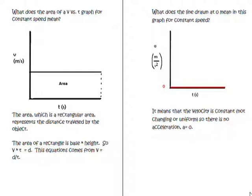The last thing we'll talk about is when you have a speed graph, there's a story in the graph there also. What does the area underneath the curve represent? The area, which is a rectangular area, represents the distance traveled by the object. To calculate that you simply have to remember your geometry: the area of a rectangle is just your base times your height.